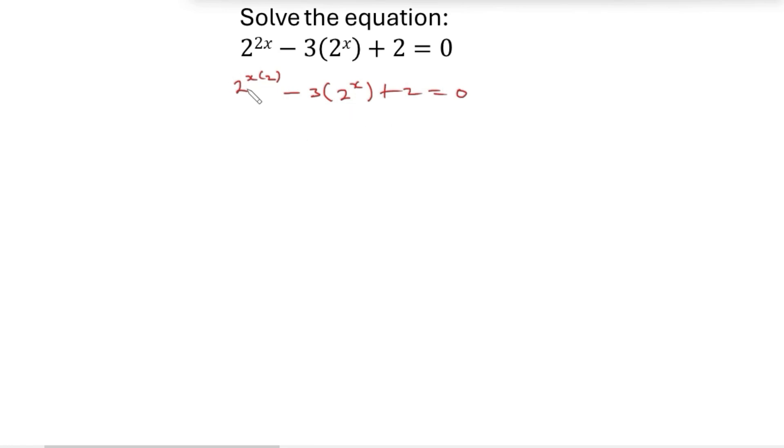So we're going to find a value to represent 2 to the power x, since it's common. We have 2 to the power x here and here. So let's say let 2 to the power x equal p. We're going to replace here with p and here also with p. So this becomes p squared minus 3 in brackets, replace with p, plus 2 equals zero.